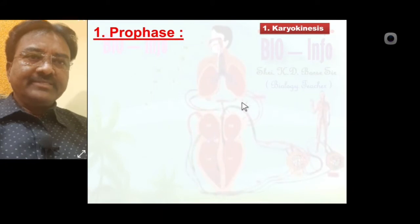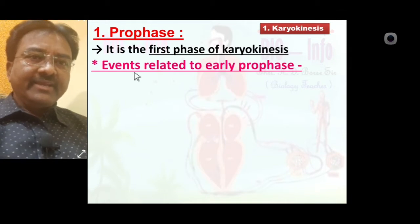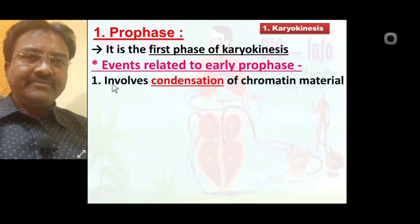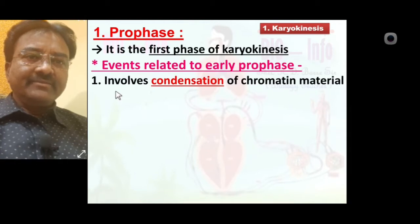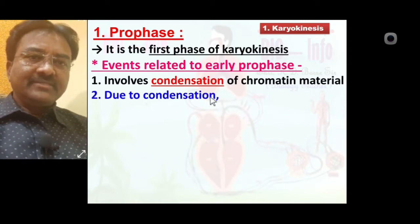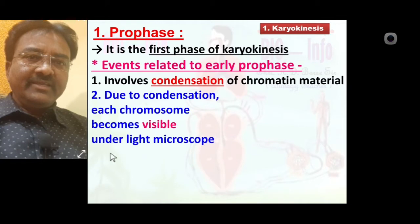First one is prophase. It is the first phase of karyokinesis. Events related to early prophase: number one, it involves condensation of chromatin material. Chromatin material, which looks like thread types, undergoes condensation. Due to condensation of chromatin material, each chromosome becomes visible under the light microscope. Let us see a diagrammatic representation of early prophase.